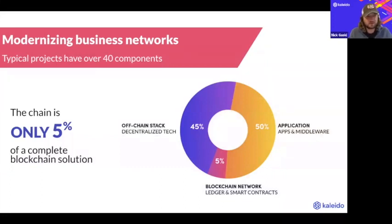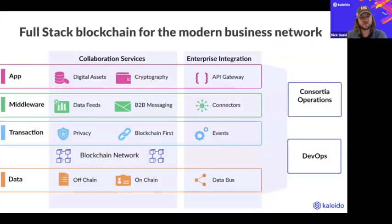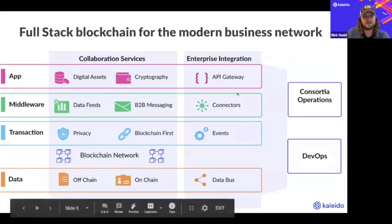One thing that's become abundantly clear for us — and this is a really core piece of Kaleido — is that the blockchain, the nodes, the smart contracts, the consensus algorithm, it's incredibly important. But when you take a step back and look at what goes into a full-stack solution, you realize there are dozens and maybe even hundreds of components that need to be integrated — identity and access management systems, data stores, key management systems, oracles, etc. At Kaleido, we've tried to address the needs of a proper, full-stack architecture with our Kaleido marketplace, providing enterprises, business networks, and developers with all of the pluggable components needed to address this stack.